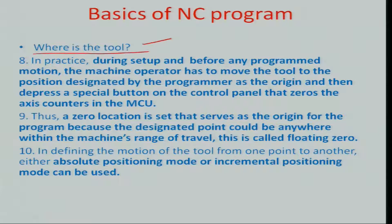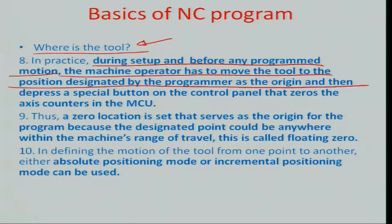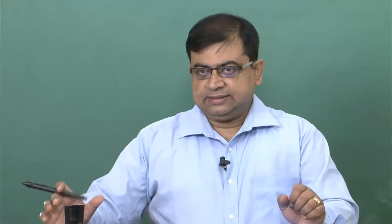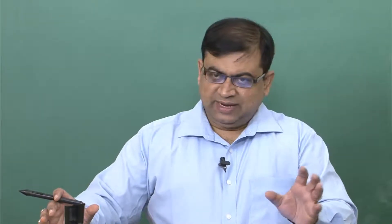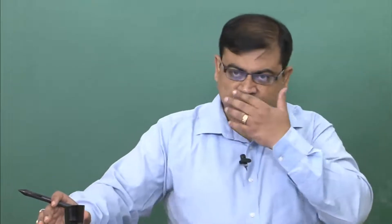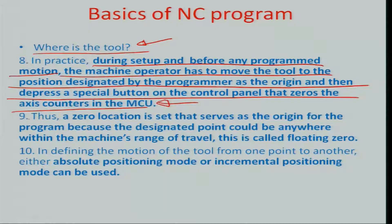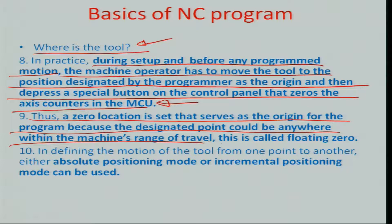In practice, where really is the tool? During setup and before any program motion is executed, the machine operator must move the tool to a position designated by the programmer as the origin, then depress a special button on the control panel that zeroes the axis counters in the MCU. This is called zero setting. Because of backlash errors in motion control linkages, there is always a tendency for positioning to deviate slightly, so you must carefully account for those small zero errors or offsets before proceeding. This zero location — known sometimes as a floating zero — serves as the origin for the program.